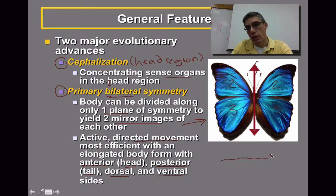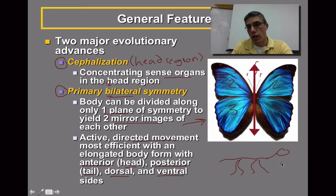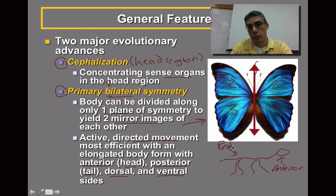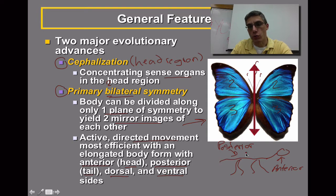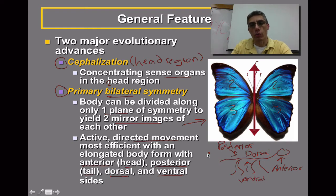If we created an animal, you would notice that we definitely have what we consider a head region — this would be the anterior region. We also have a very defined tail region, or posterior region. When you look at dorsal and ventral, dorsal is going to be on top, and the ventral region of the animal is going to be on the bottom. This is the very first time that we have animals where we have identified distinct regions of the animal.